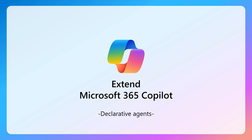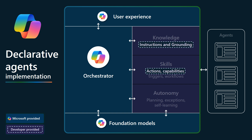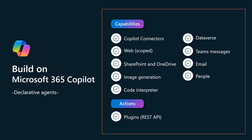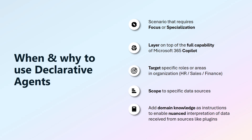Microsoft 365 Copilot can also be extended with declarative agents, allowing you to add new capabilities through declarative configurations. Declarative agents leverage the same foundational models and orchestrators as Microsoft 365 Copilot. Developers can add extra knowledge and skills, making these agents suited to specific business processes. They can leverage Copilot connectors to consume unstructured external data, documents from SharePoint Online and OneDrive, public web content via Bing search, data in Microsoft Dataverse, messages in Teams, and emails and people in the organization directory. They can invoke custom REST APIs through actions and include out-of-the-box capabilities like image generation and code interpretation. Use declarative agents when your scenario requires focus or specialization, such as targeting specific roles or areas like HR or sales.